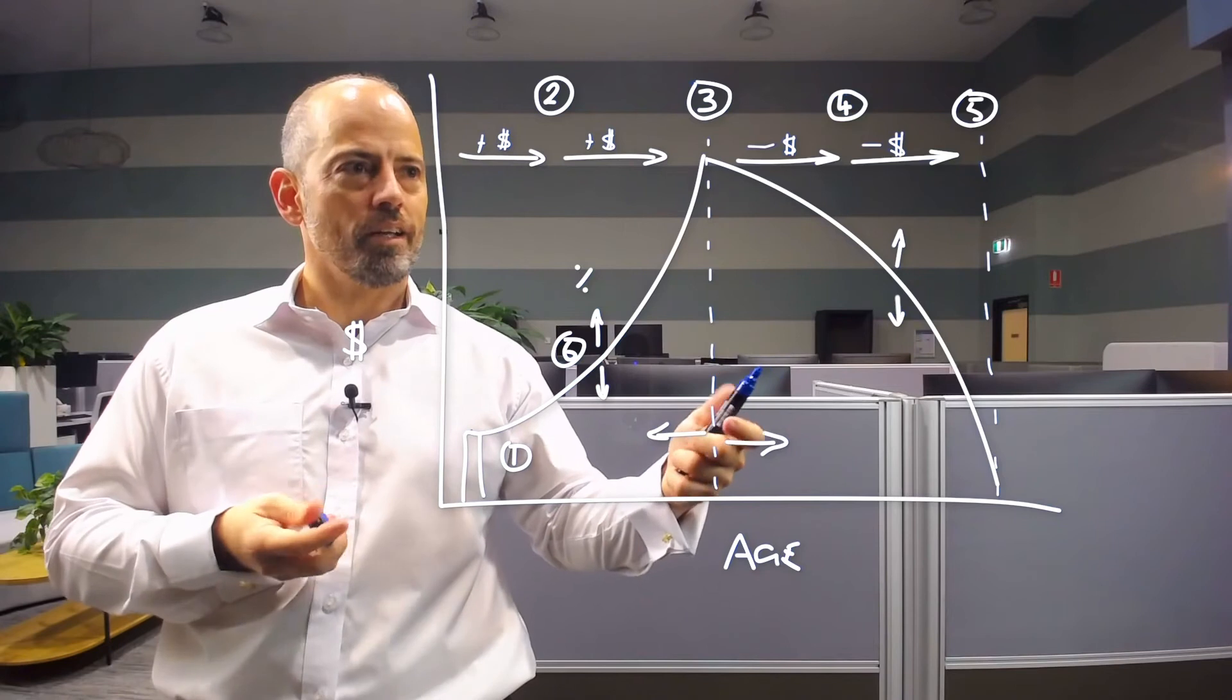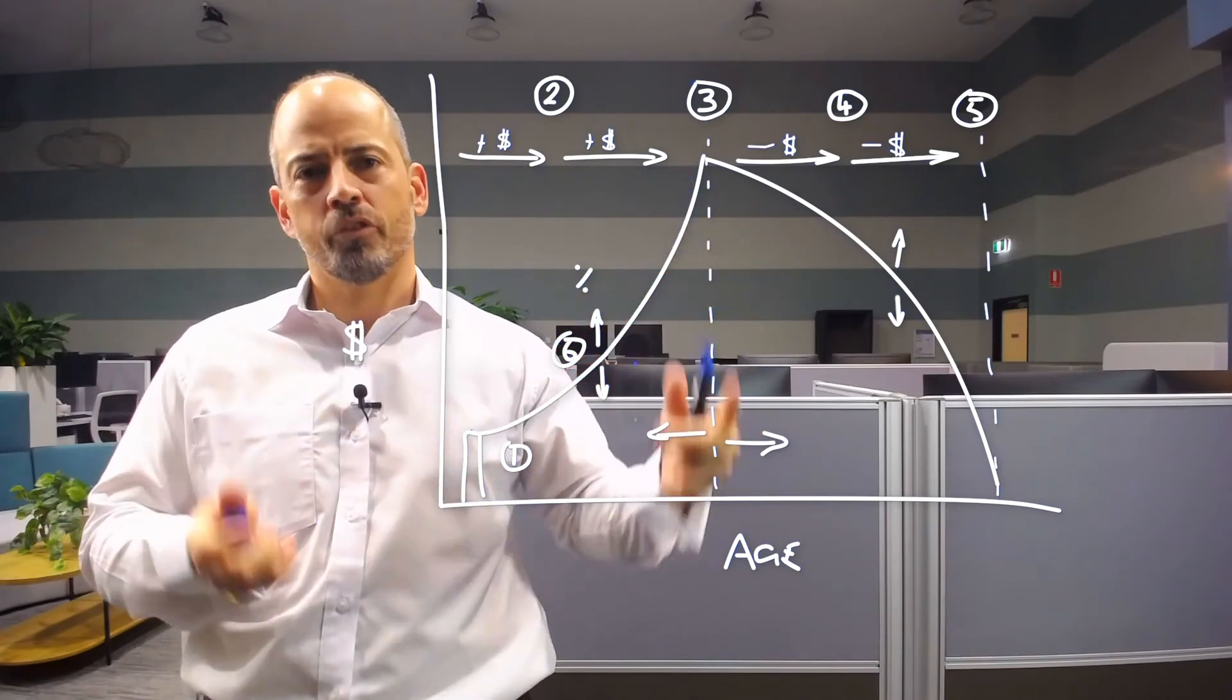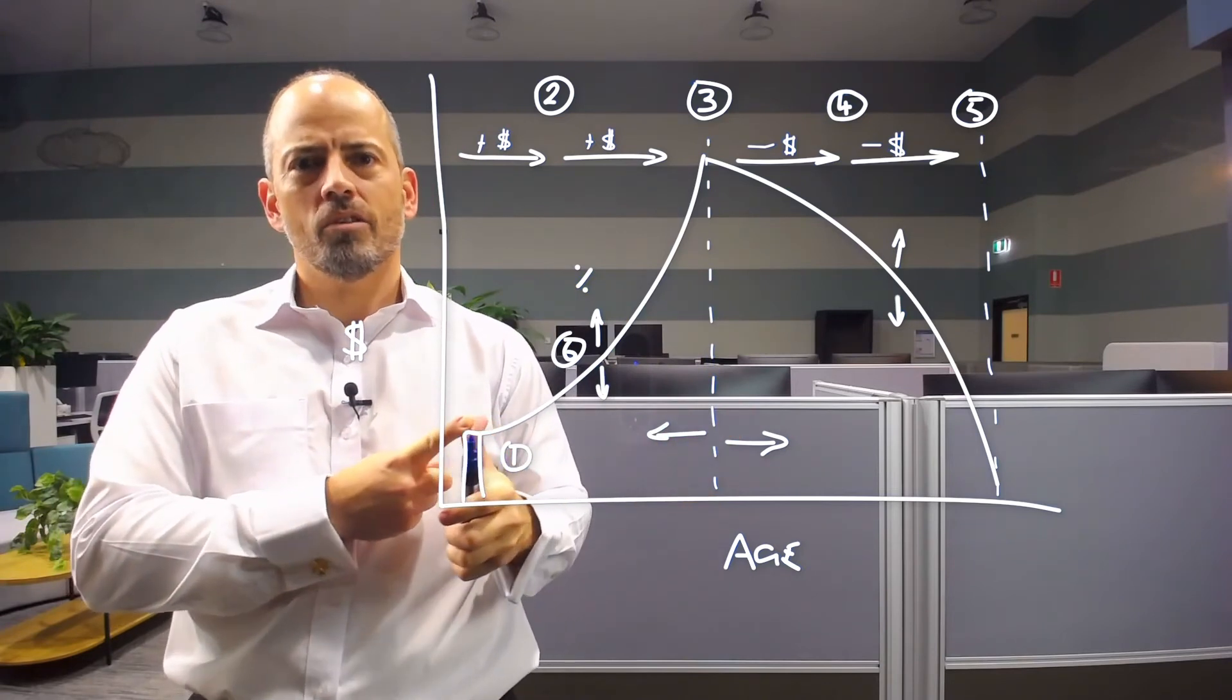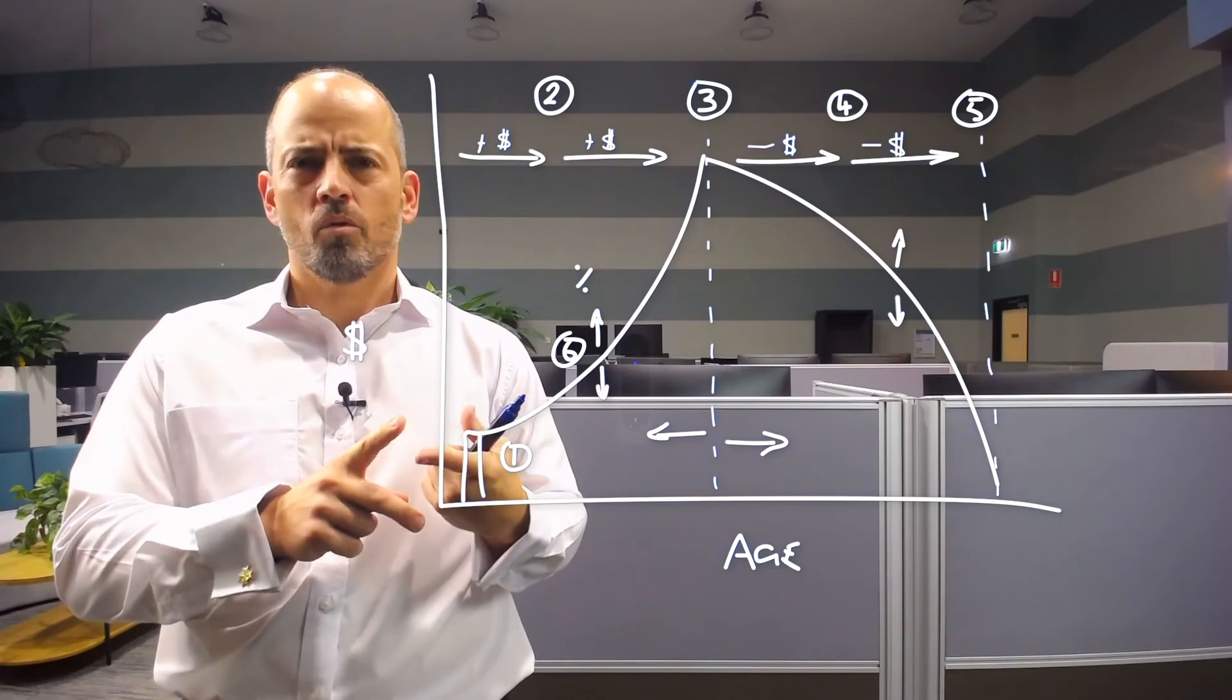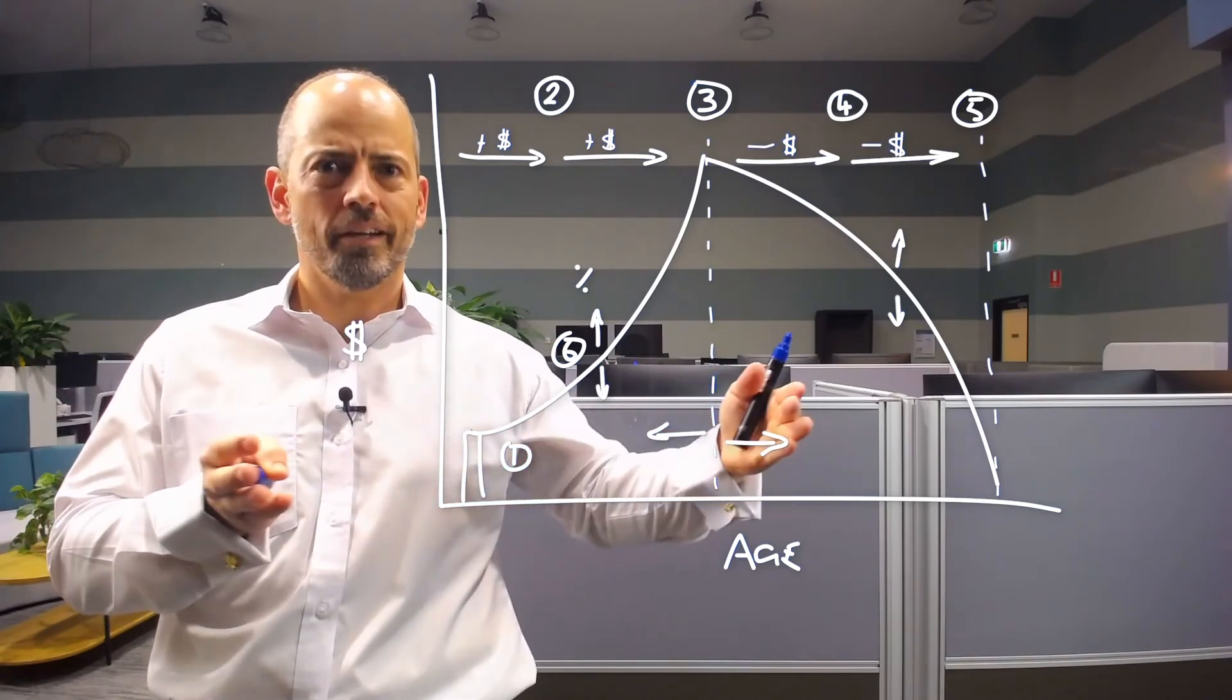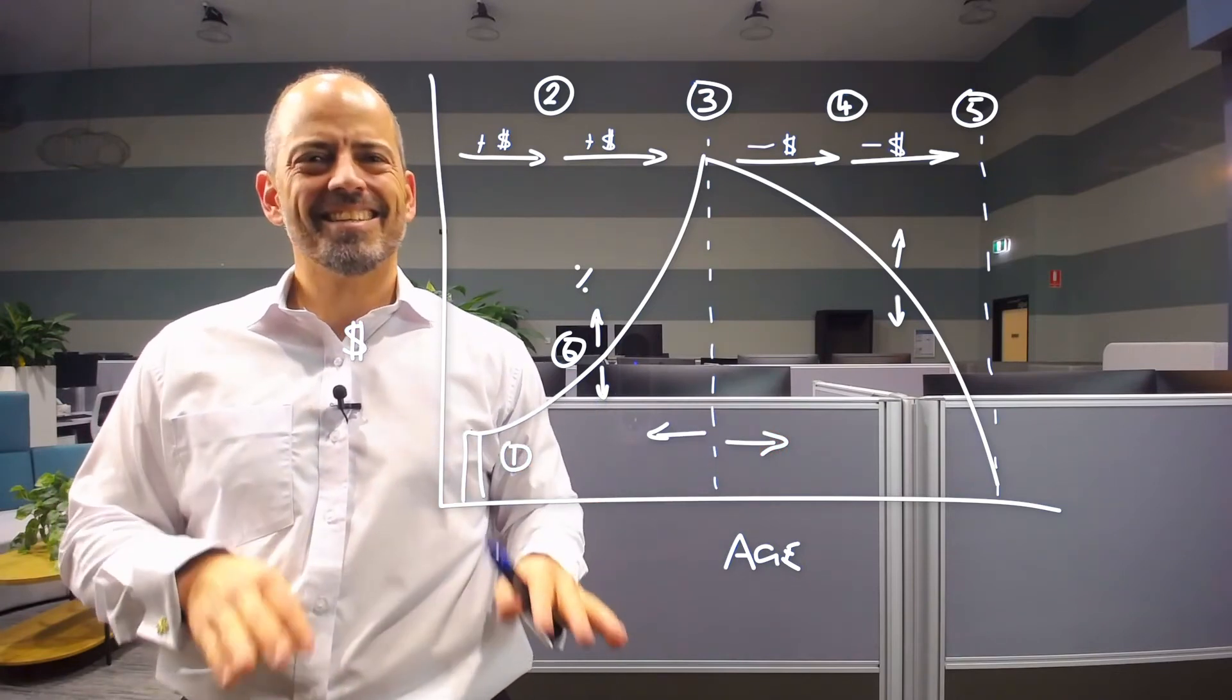But either way, all of these variables are a compromise, and some of the variables are more important to you than others. But putting them all together and understanding what's the risk required to achieve my goals, what's the risk capacity in my finances to be able to accommodate the risk in my plan, and finally, what's my personal risk tolerance to be able to stay seated when it feels like the investment world is turning upside down?